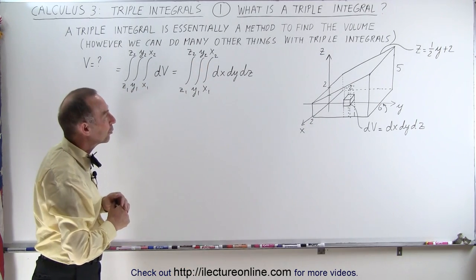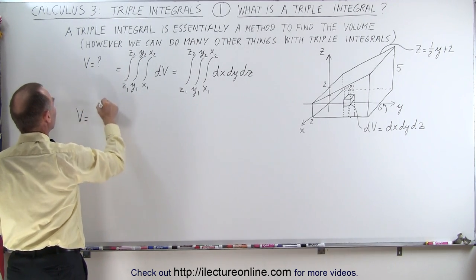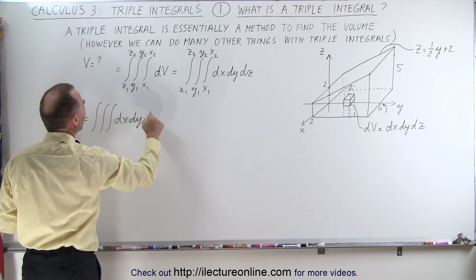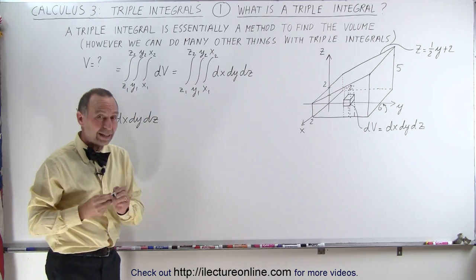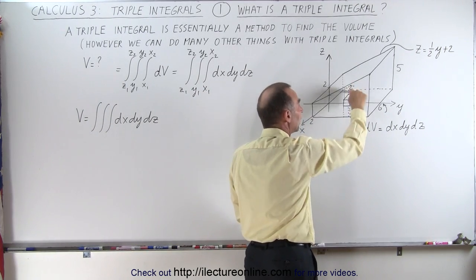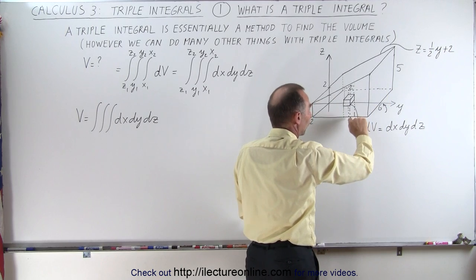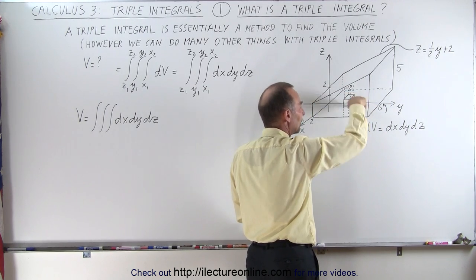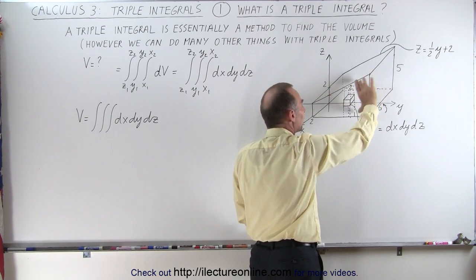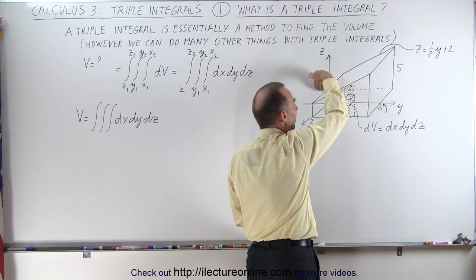When we integrate that volume element dv, we integrate dx, dy, dz with the appropriate limits. The volume of that truncated wedge equals the triple integral of our little volume element dx dy dz. We're going to first integrate in the z direction, then in the y direction, then in the x direction. First we get a pillar with cross-sectional area dx times dy and height z, depending upon where we are.